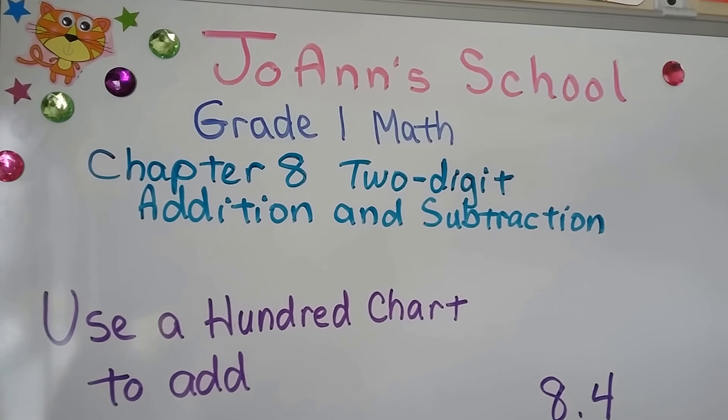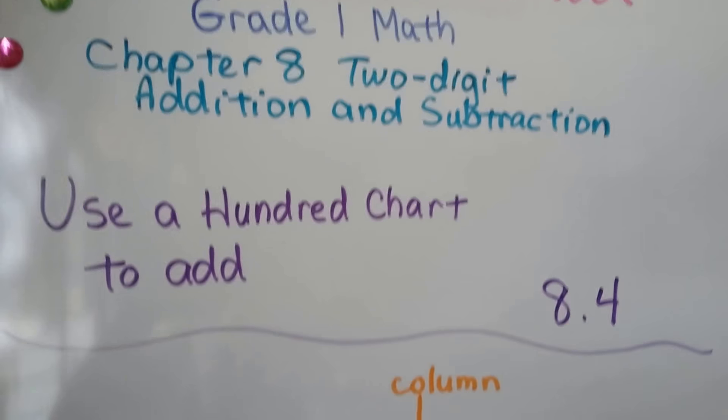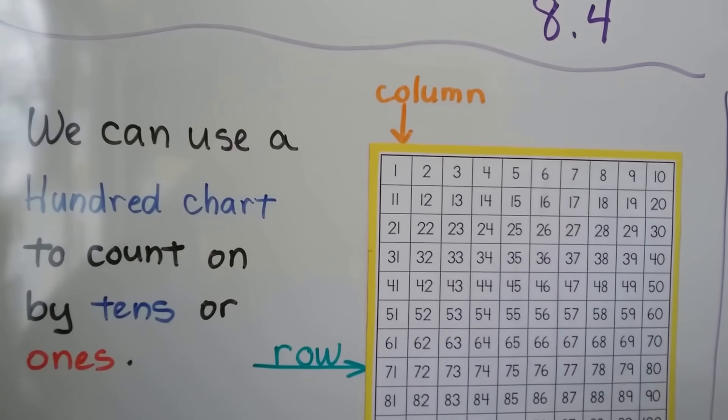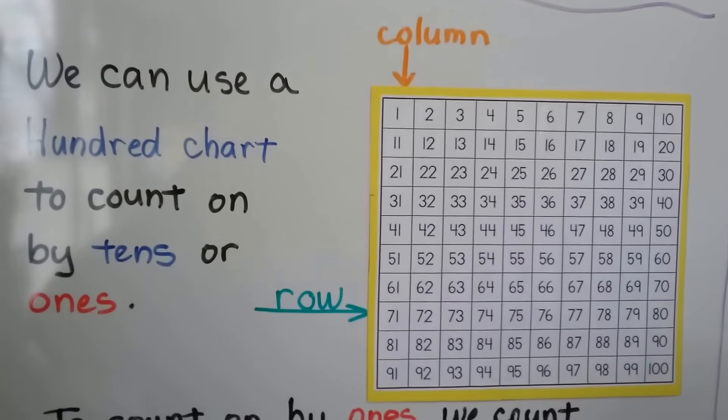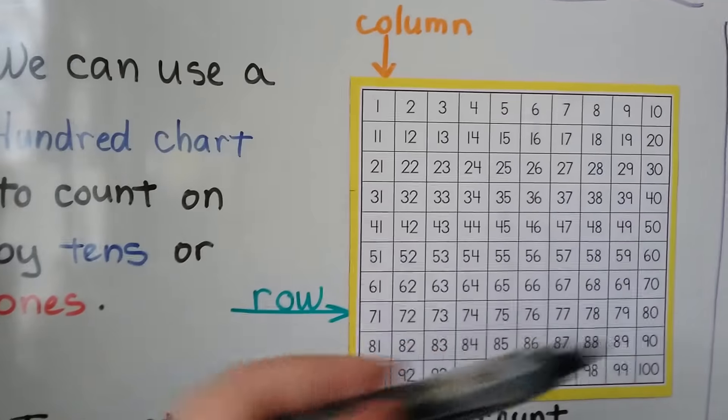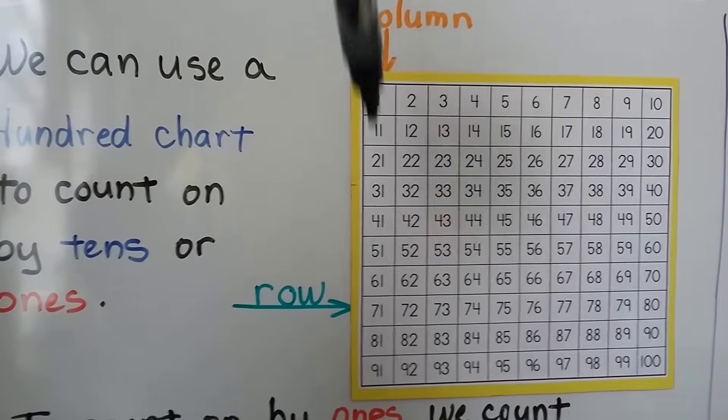Use a hundred chart to add, lesson 8.4. We can use a hundred chart to count on by tens or ones. It's very important that you know going across is a row and going down is a column.